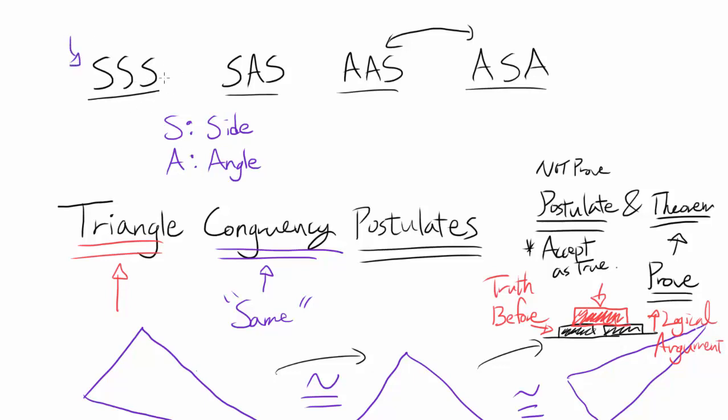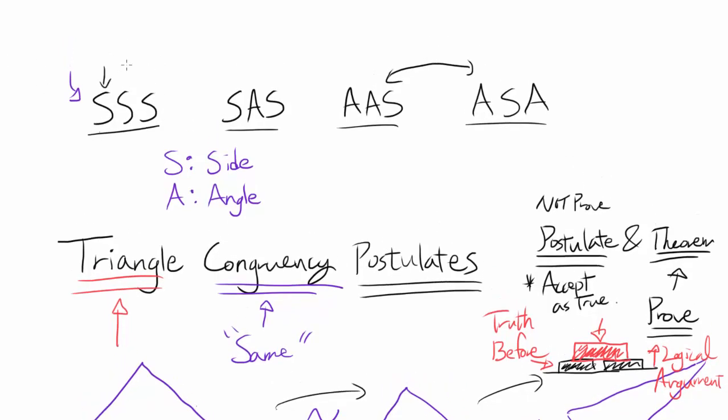Let me first examine SSS — the side-side-side congruency postulate. This tells us that if two triangles have the same side, another same side, and another same side — that is, all three sides are congruent — then the triangles themselves have to be congruent. SSS is telling us there is only one possible triangle that can be generated using those three sides; we cannot make two different, non-congruent triangles using the same three sides.